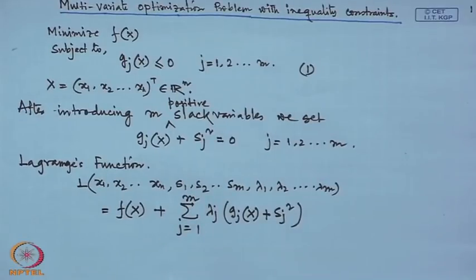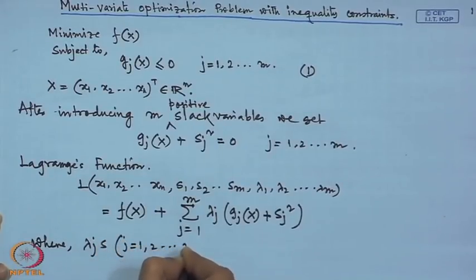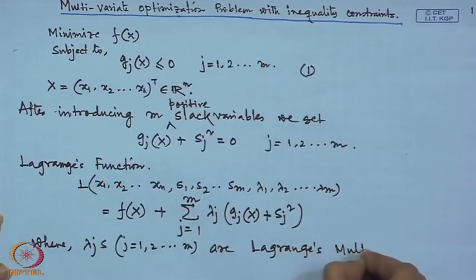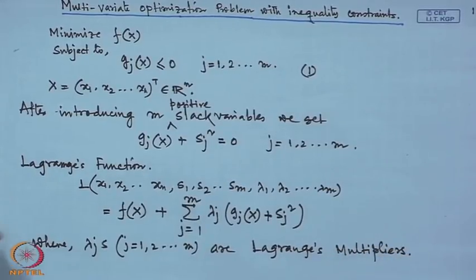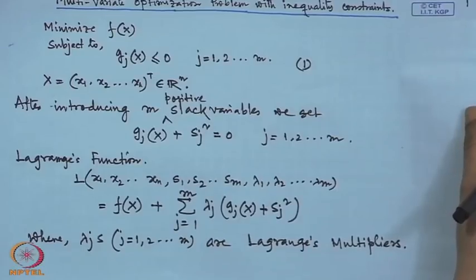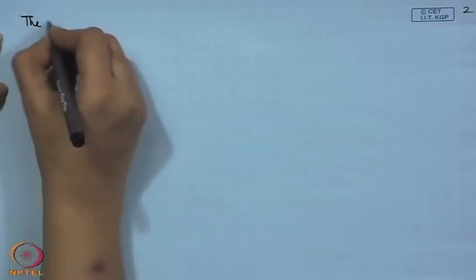The λ_j's are the Lagrange multipliers. We develop the necessary conditions by taking first-order partial derivatives of L with respect to all 2m + n variables and setting them to zero. This gives us a set of equations that are the necessary conditions for optimality.